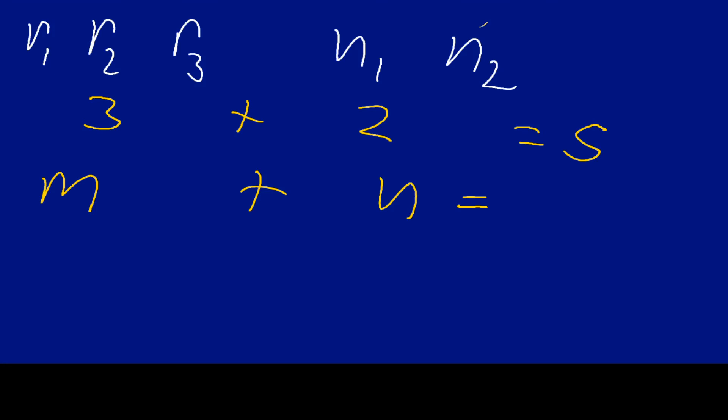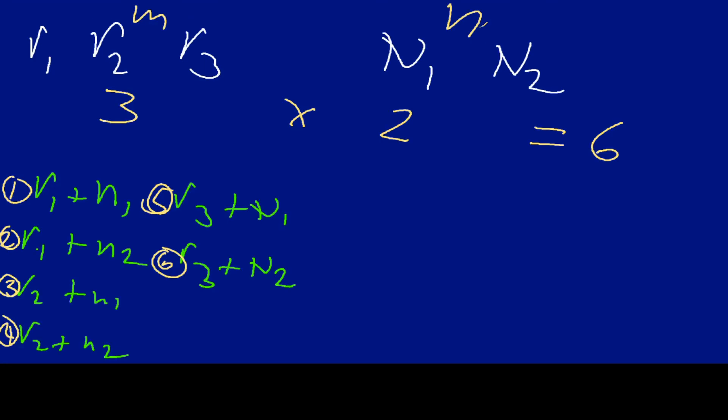And then for the second one we looked at the multiplication principle, and that involves when you're making more than one choice. So in our example here I was making two choices, one rice dish and one noodle dish. And so since I have three rice dishes and two noodle dishes, there are six choices altogether. And they are found right here at the bottom of the screen in case you're wondering. And so that is the things that we talked about in this particular video.